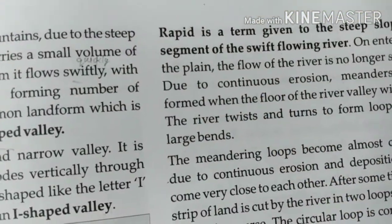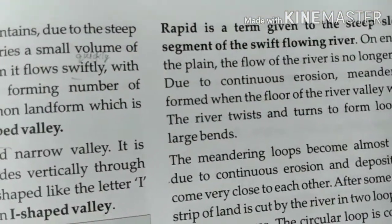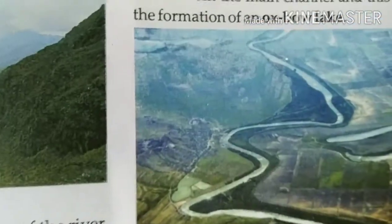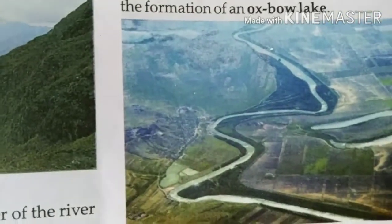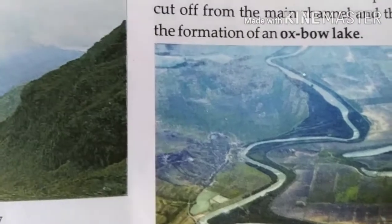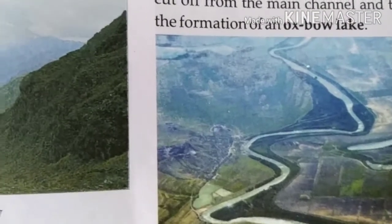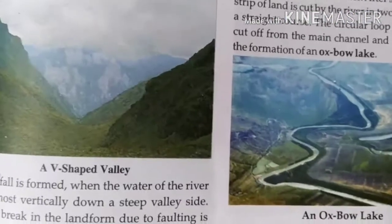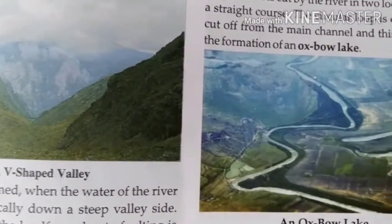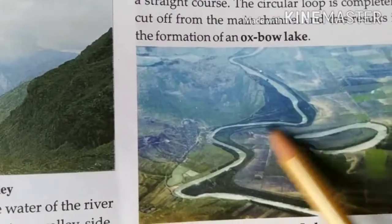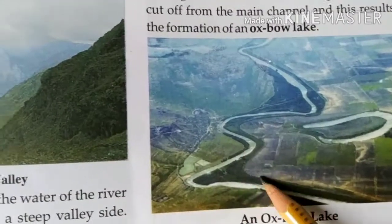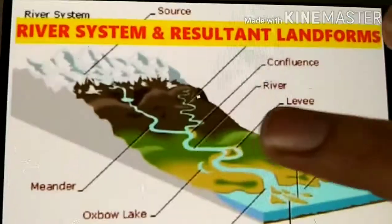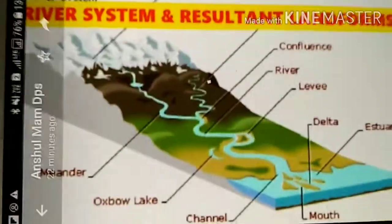Rapids — if you look at the picture, rapids relate to meanders. This means that if the river flows in a zigzag form, then it is called rapids. You can see in the picture that these are meanders.